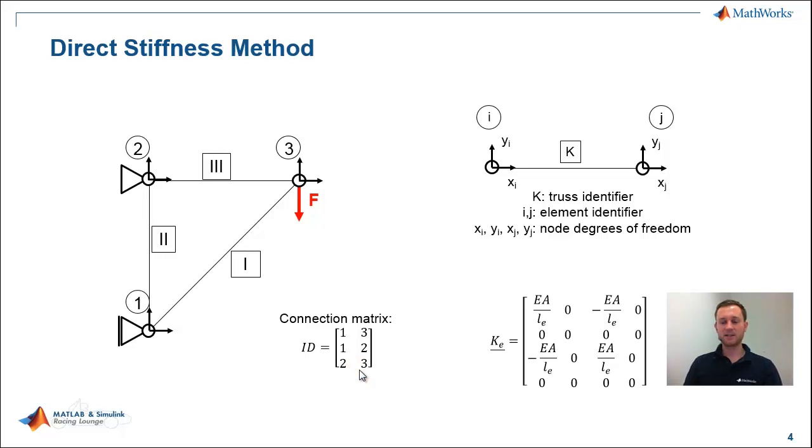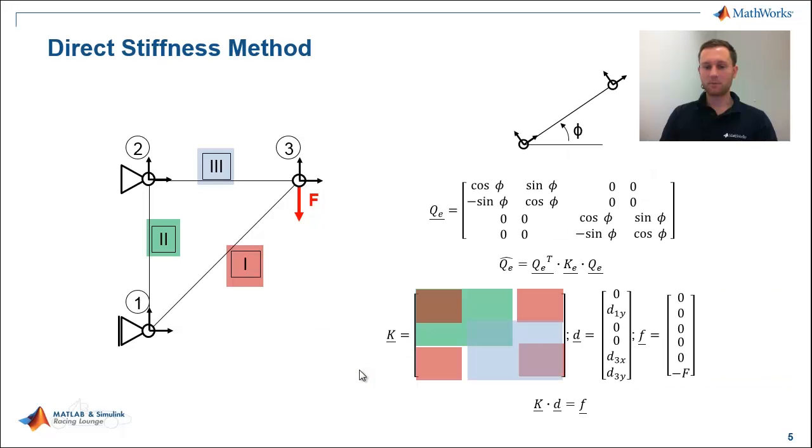As easy as that, you want to create the system matrix now. The only thing that might happen to the stiffness matrix of an individual truss is, the truss is rotated, for example, as truss 1 here. That means employing a rotation matrix to the stiffness matrix of your system. This means transferring the local coordinates to the global coordinates. And then we are already ready to fill up the system equations.